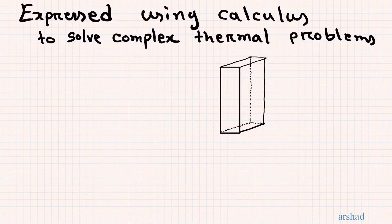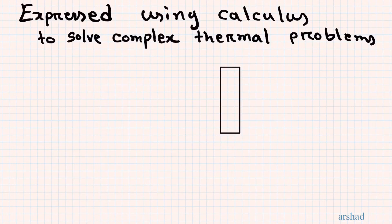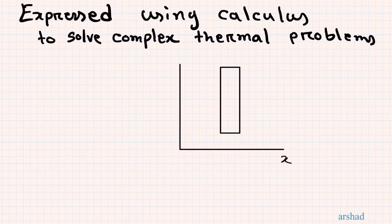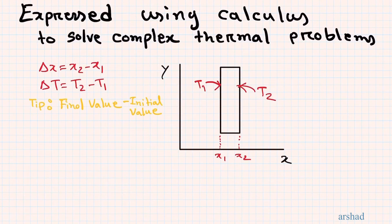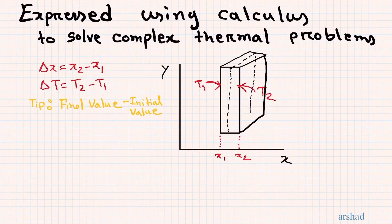Number four: you can express Fourier's law using calculus to solve complex thermal problems. Consider the same plane wall simplified to a 2D problem in X and Y. Mark the ends of the wall in the X direction with coordinates X1 and X2, so Delta X equals X2 minus X1. The temperature at X1 is T1 and at X2 is T2, giving temperature difference Delta T equal to T2 minus T1, following the calculus convention of final minus initial value.